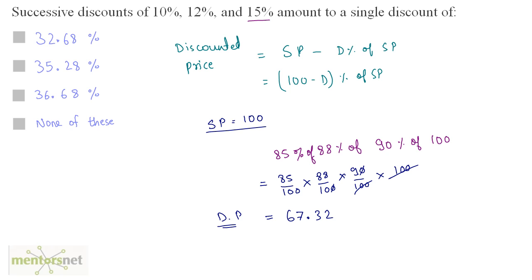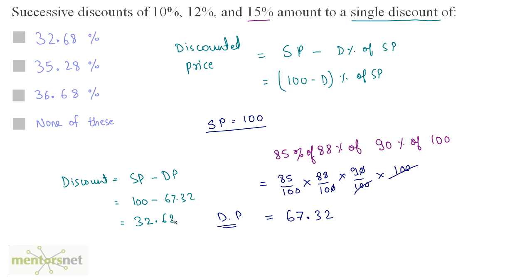That's not what is asked — we have been asked what the discount is. Discount equals selling price minus discounted price: 100 minus 67.32 equals 32.68. Since I took the base as 100, this means the single equivalent discount is 32.68%. The answer is option A.